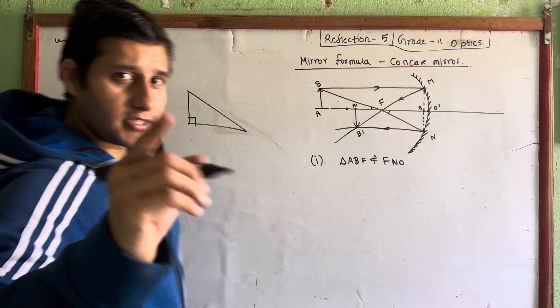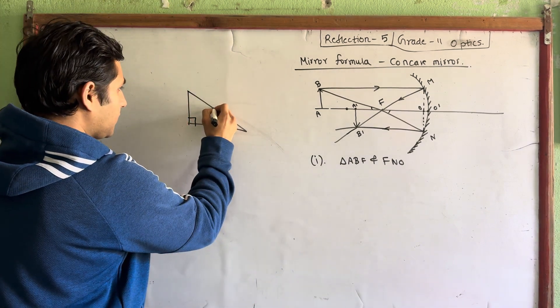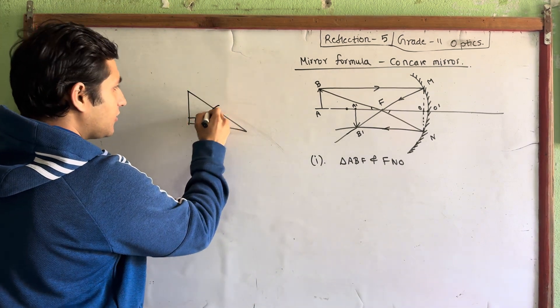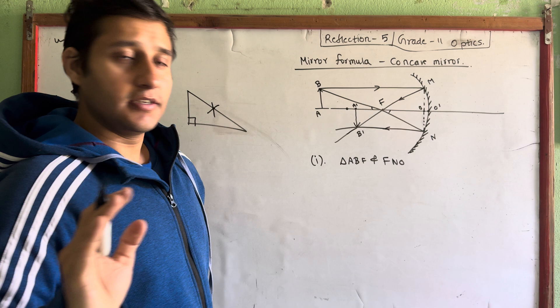Then, what is done? It's a hypotenuse, and you can see that line.